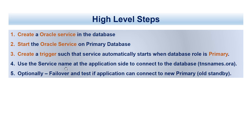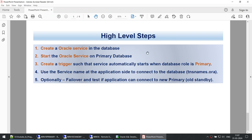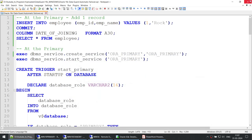There are some steps to do at the database level and some at the client level. These are one-time configuration steps that you perform when setting up Data Guard. Once set up, every time a switchover or failover happens you don't have to make any changes — the application or client will automatically connect to whichever database is primary at that point in time. Now that we've seen all the steps, let's go ahead and do this.